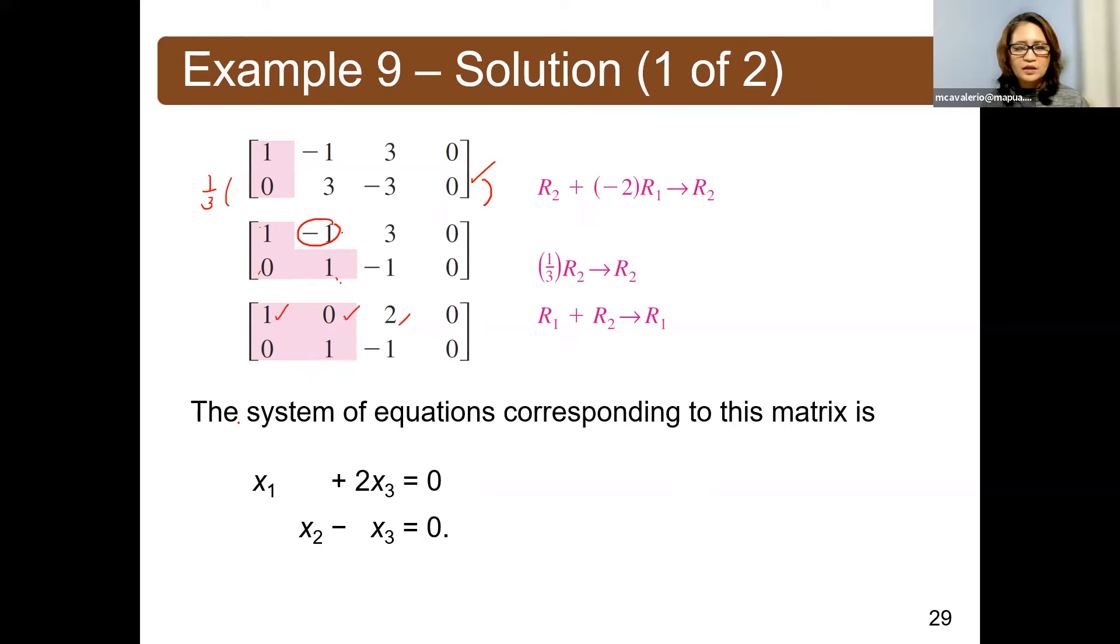We can interpret the reduced row echelon form of the matrix. We can interpret this as x sub 2 minus x sub 3 is equal to 0. And then for equation, for rho 1, we will have x sub 1 plus 2x sub 3 equal to 0. How do we find the solution?